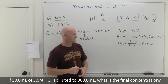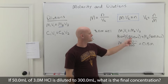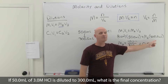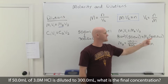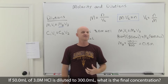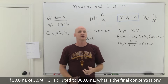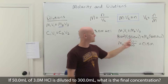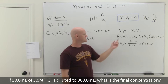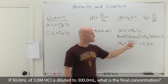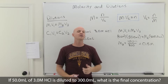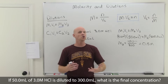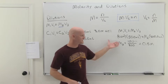Another way to look at it: we went from 50 mL to 300 mL, which is 6 times more volume (since 300 = 6 × 50). If you end up with 6 times more volume, you end up with 6 times lower concentration. Going from 3 molar divided by 6 gives 0.5 molar. This is called a six-fold dilution — you end up with a six-fold lower concentration.